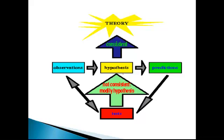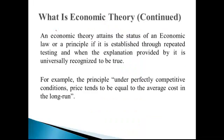We can explain this through a diagram which shows how a hypothesis converts into a theory. If we have certain observations or explanations, and with the help of these explanations certain predictions can be made, and these predictions can be tested during repeated testing, then the hypothesis becomes a theory.